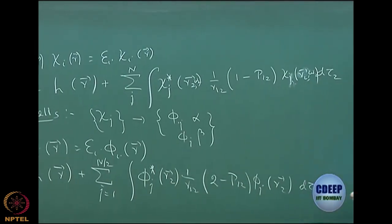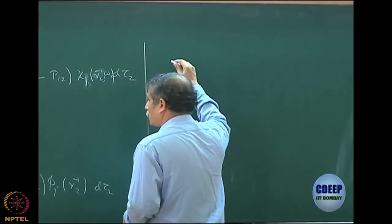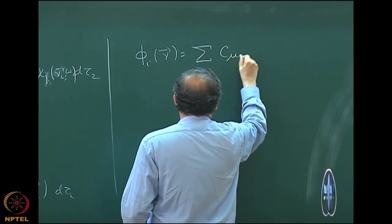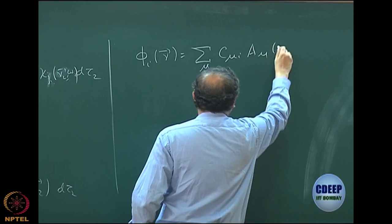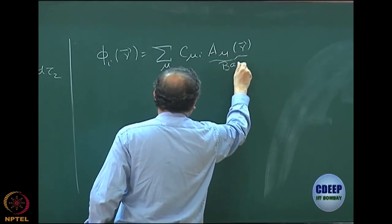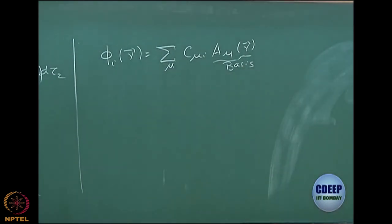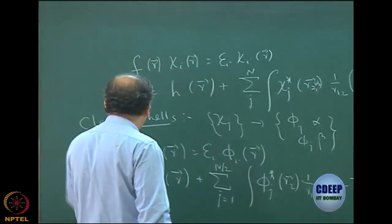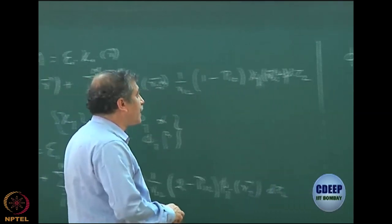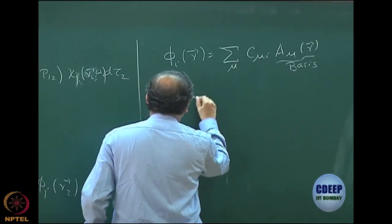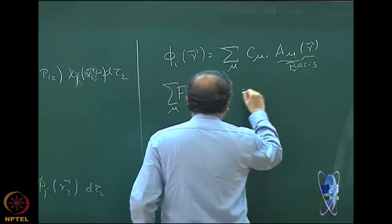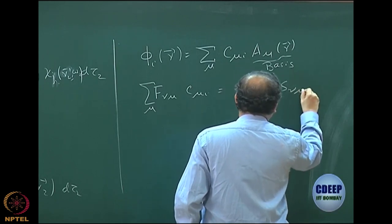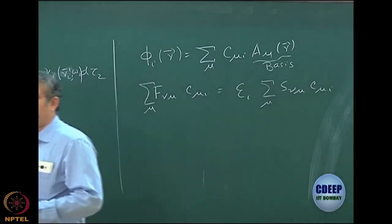After that, for molecules, we expanded each phi_i(r) as a linear combination of atomic orbitals — some basis which we call A_mu(r). This is a known basis of known functions. By expansion of this equation and then projecting by different A_mu, we wrote the equation: sum over mu of F_mu-nu C_mu-i equals epsilon_i times sum of S_nu-mu C_mu-i. That is your Hartree-Fock-Roothaan equation.